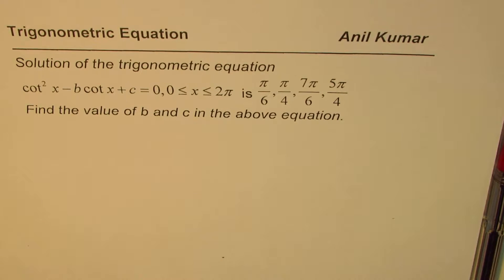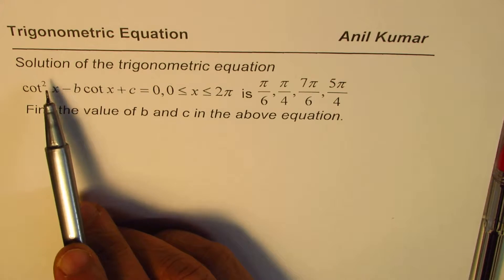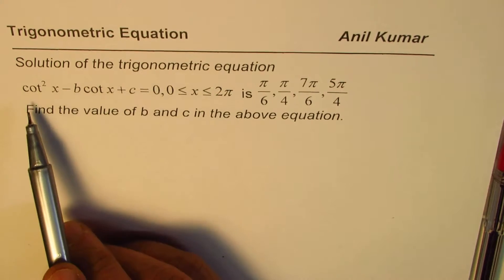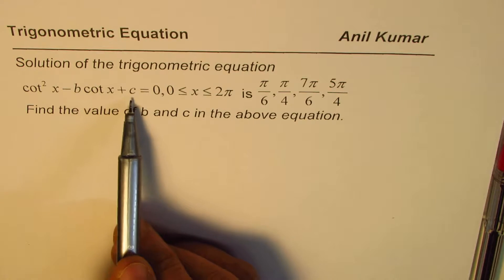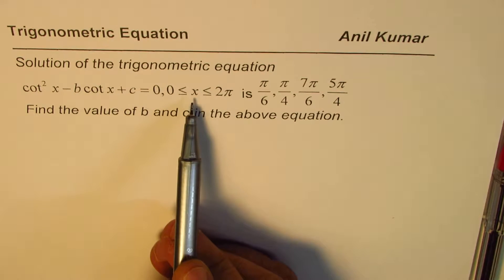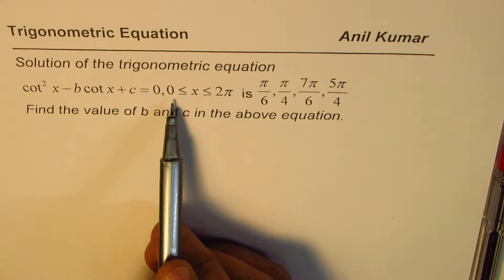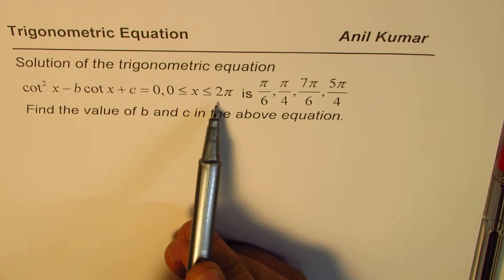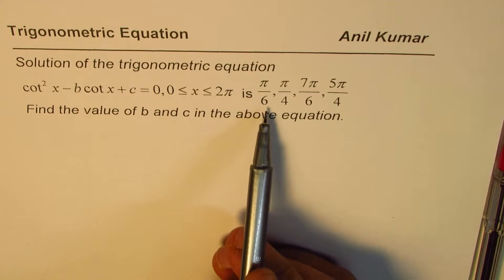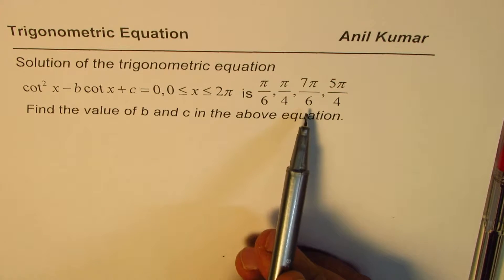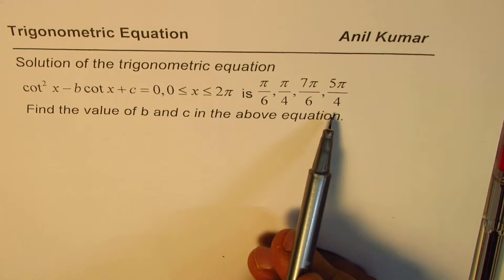I'm Alil Kumar, sharing with you a very good question on trigonometric equations. The question is: solution of the trigonometric equation cot squared x minus b cot x plus c equals 0, where x is greater than or equal to 0 and less than or equal to 2π, is π/6, π/4, 7π/6, 5π/4.